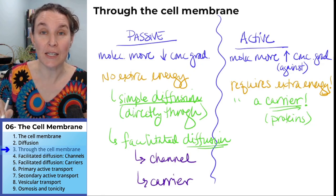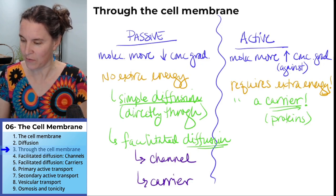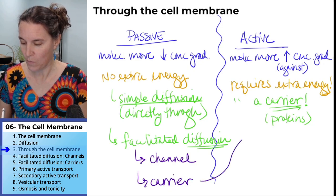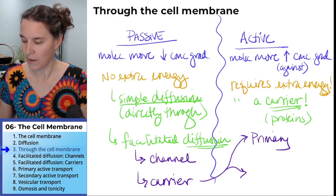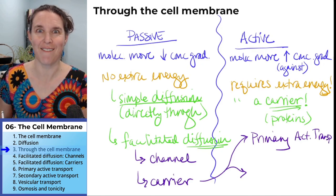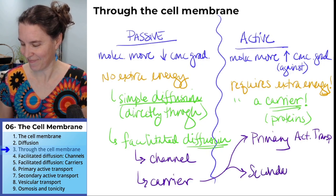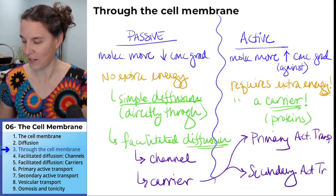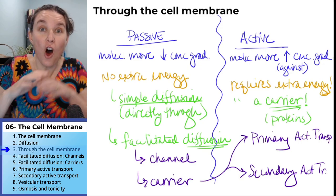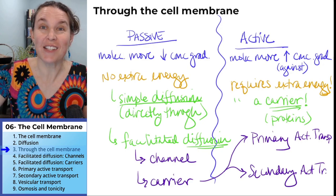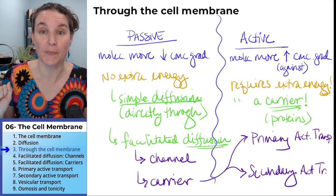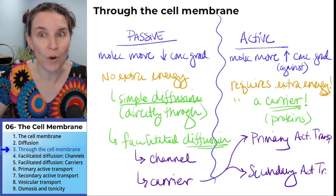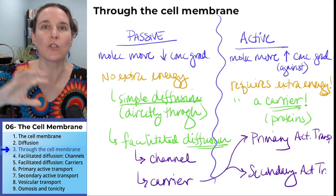There are actually two kinds of active transport, and both of them require carriers. We have primary active transport and secondary active transport. All active transport requires an energy source because we're moving molecules against their concentration gradient, and all active transport requires a carrier protein to move those molecules.